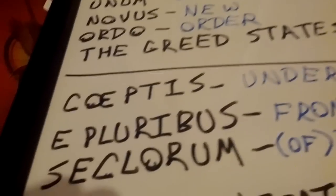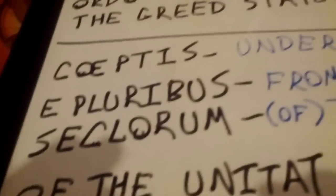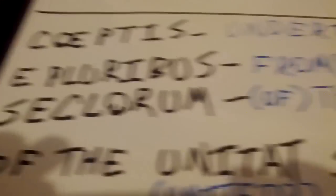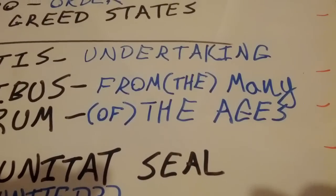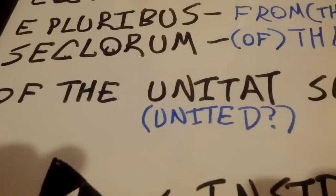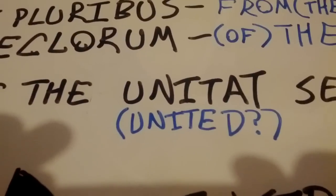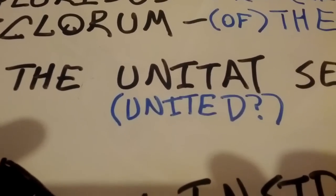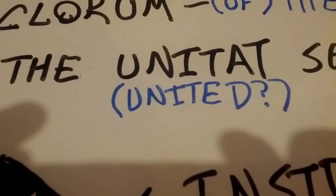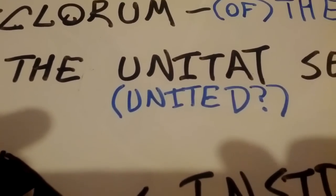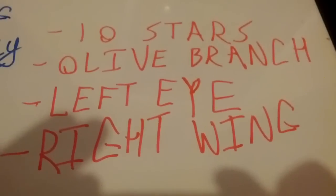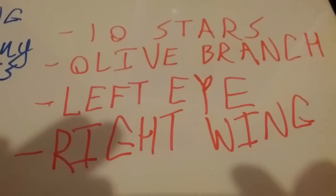The other way we see 'coictus' meaning 'undertaking,' so originally it would be 'annuit coictus' — he approves of the undertaking. You got 'e pluribus' which means 'from many' or 'from the many,' 'seclorum' meaning 'the ages' or 'of the ages,' and 'of the unitat seal.' I don't know — it could be a misspelling or another verb tense in Latin. The closest I got was 'unitas,' which is 'united.'